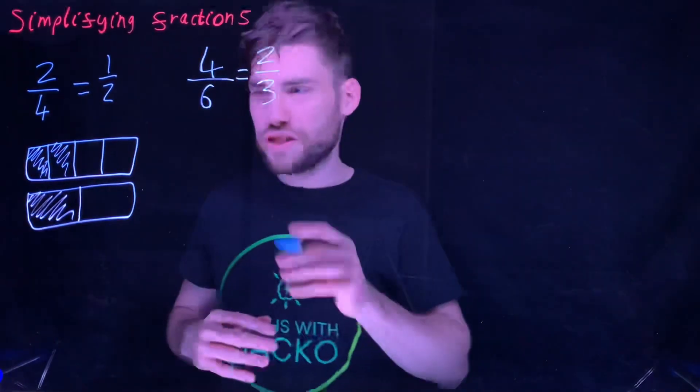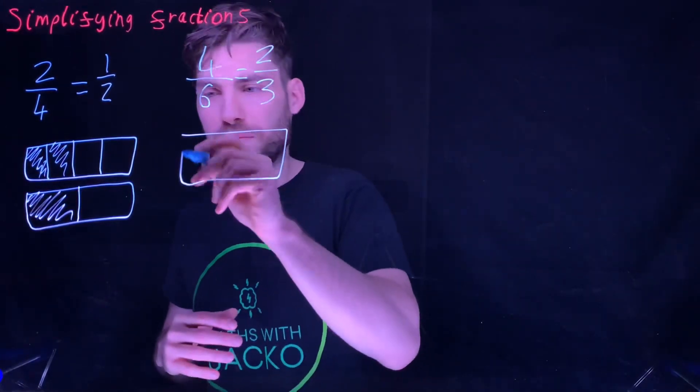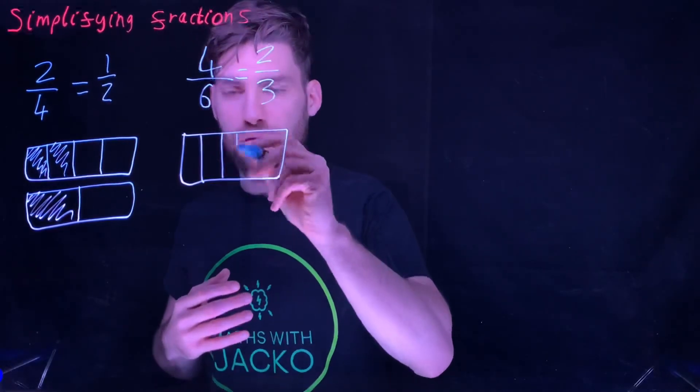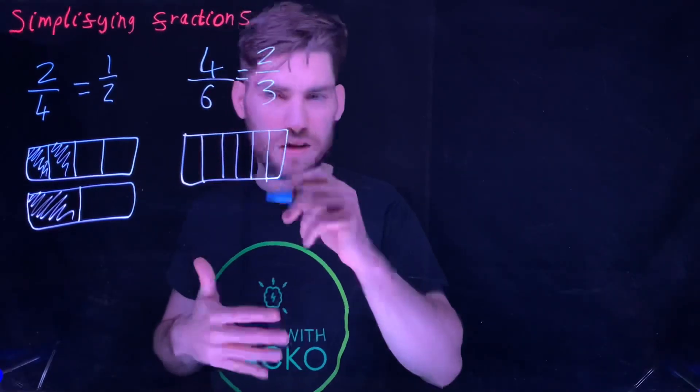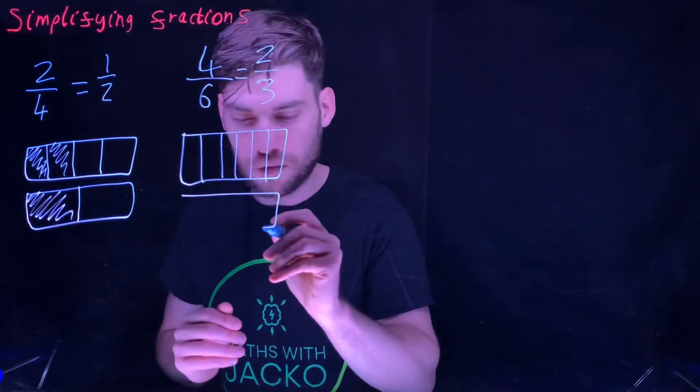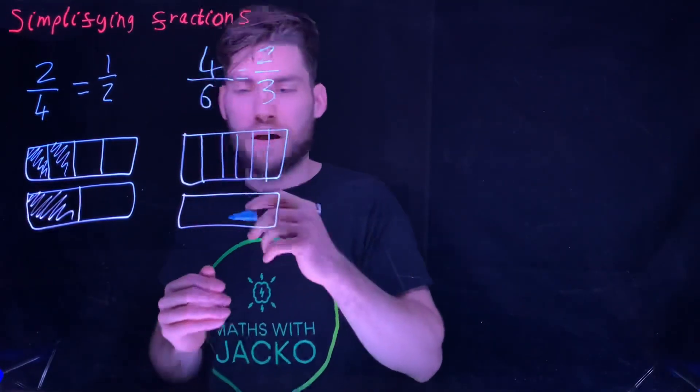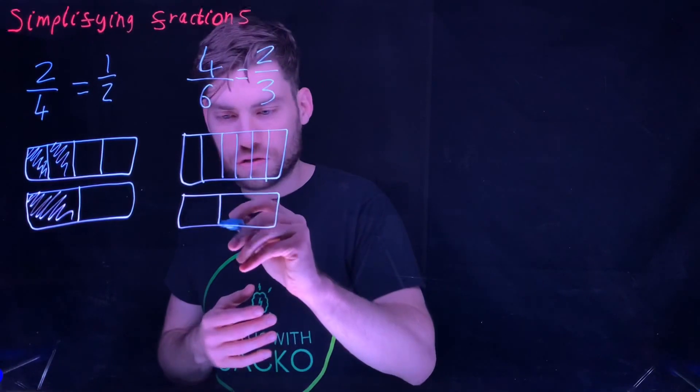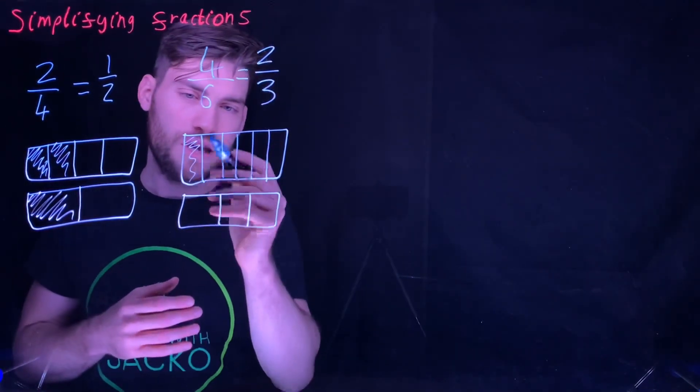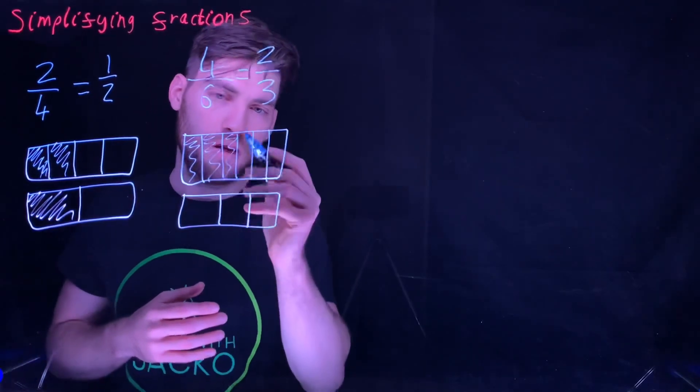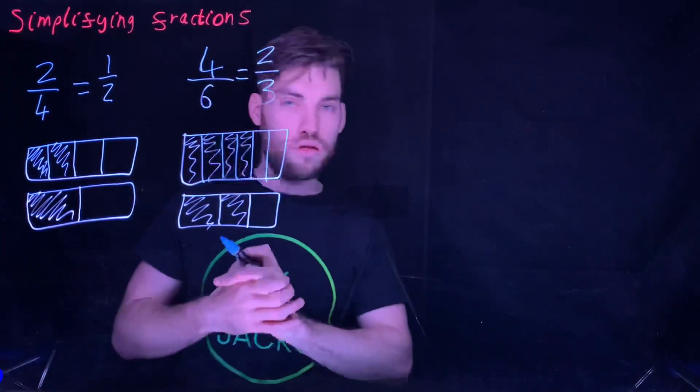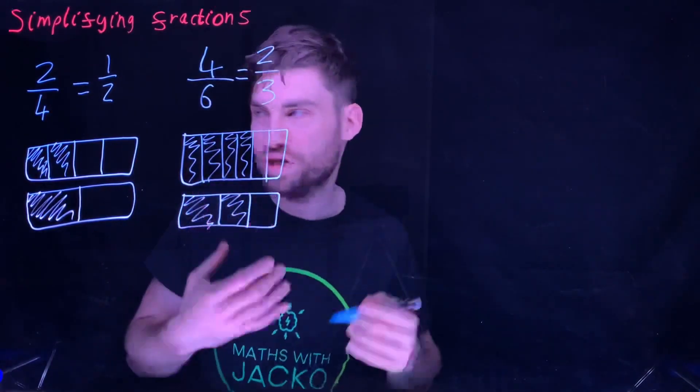To help you understand that, same again, if we have this bar and the bottom number six, the denominator six, we split it: two, three, four, five, six. Your bar doesn't have to be perfect. But it just helps with general understanding. And then we split that into thirds. We can now see four sixths is the same as two thirds.